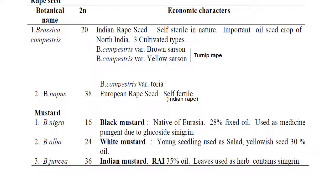In mustard: Brassica nigra has chromosome number 16, called black mustard, native of Eurasia, with 28% fixed oil, used as medicine, and contains the pungent glucoside sinigrin. Brassica alba has chromosome number 24, called white mustard; young seedlings are used as salad, with yellowish seed and 30% oil. Brassica juncea has chromosome number 36, called Indian mustard or rai, with 35% oil; leaves are used as herb and it contains sinigrin.